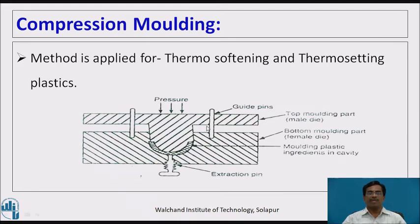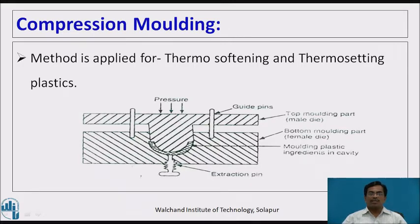Compression molding: this method is applied for thermosoftening as well as thermosetting types of plastics. As shown in the diagram, it consists of a die. This die has a top molding part and a bottom molding part. These two parts are pinned together by means of a guide pin, and at the bottom an extraction pin is also provided. The plastic mold is prepared by pressing the upper part of the mold. Before this, a plastic mix is added and pressure is applied from the top, giving us a formed article.